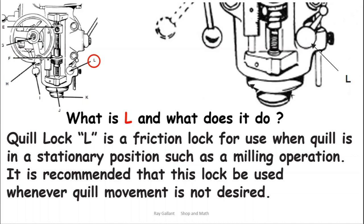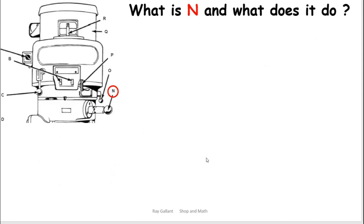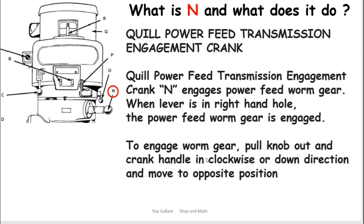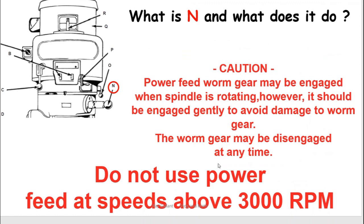M is your quill feed handle and power feed transmission engagement crank. That's a mouthful. Be very careful which way you put it in. You want to go basically underhanded with it. You don't want to try and push it overhand because it's only supposed to go in a downward stroke. A cautionary tale: do not have this engaged when you're running above 3000 RPM. It can cause damage to a couple of other internal units.